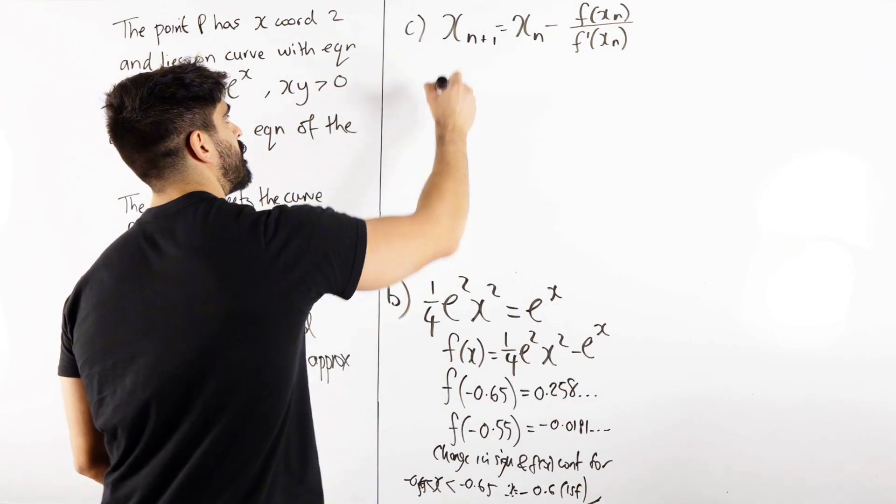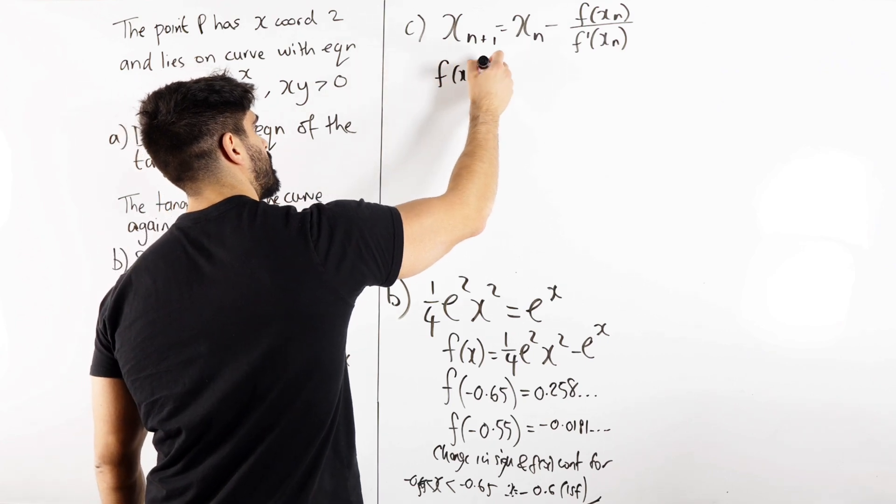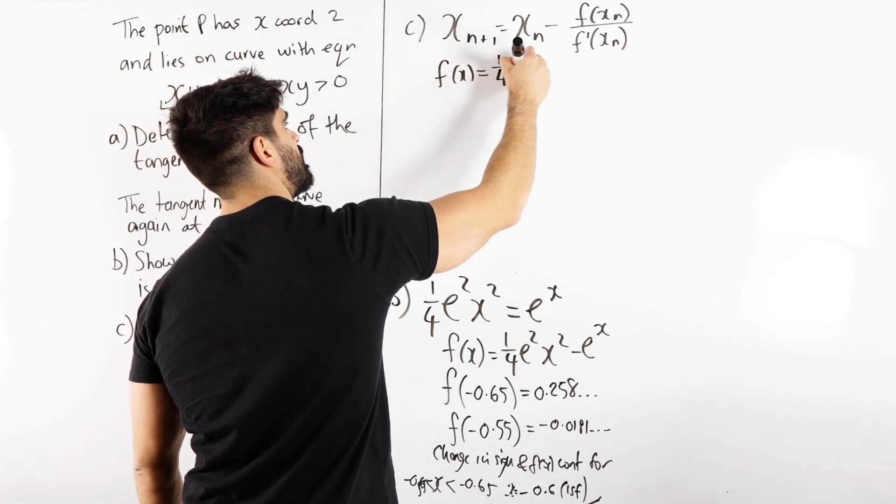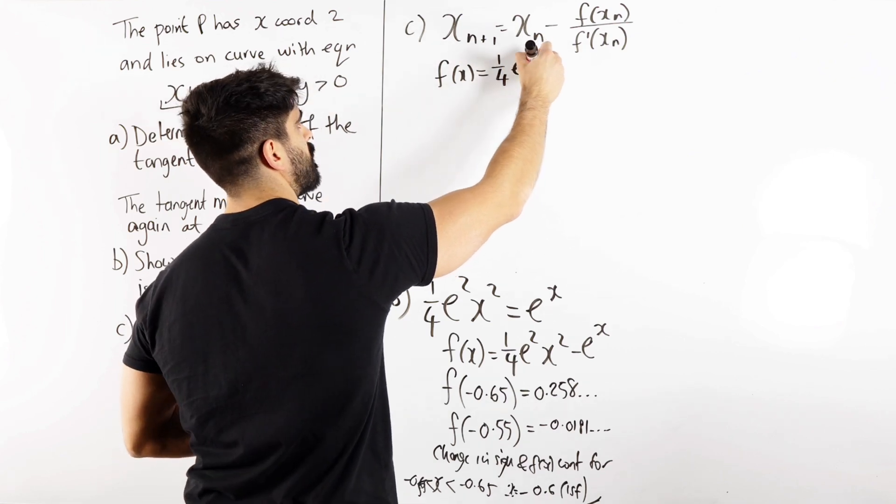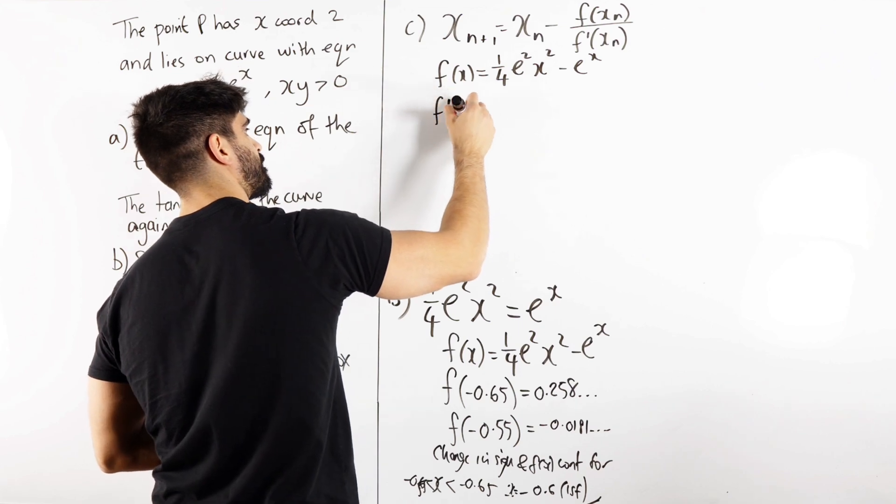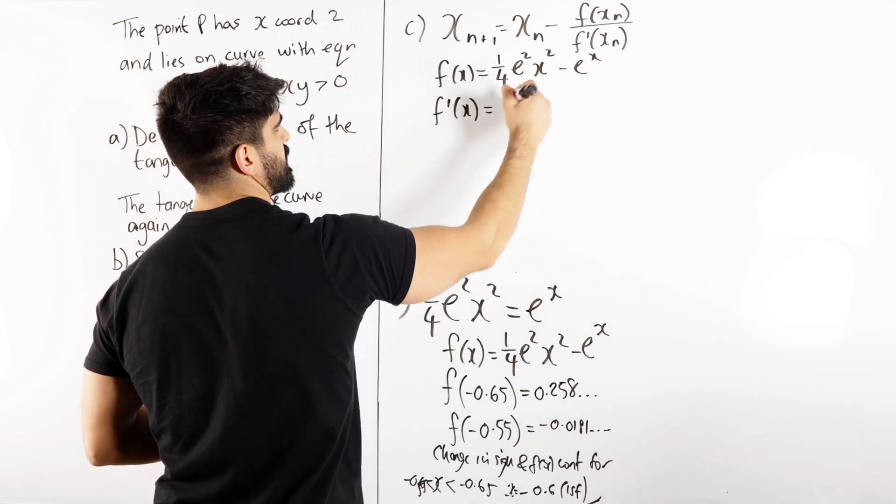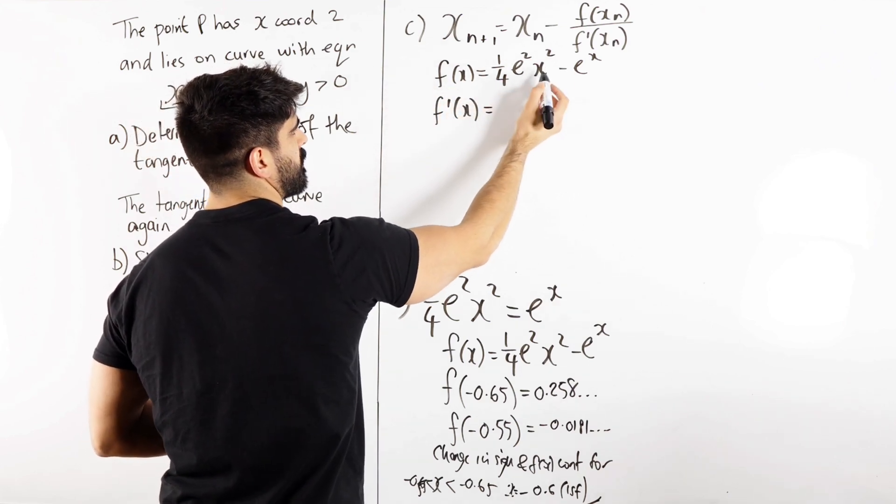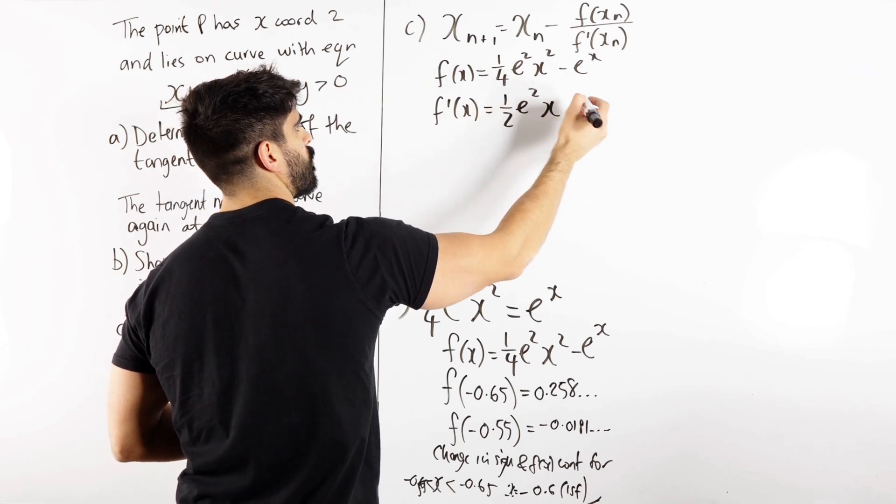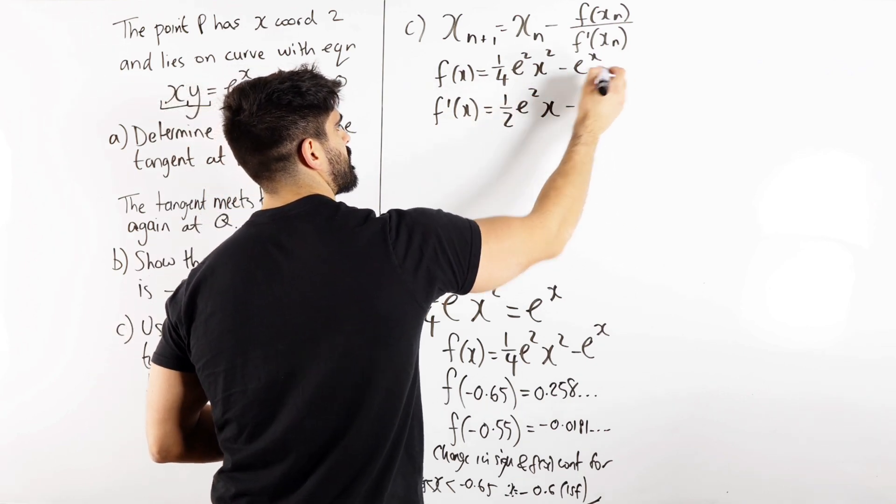So for us, our f of x is a quarter e squared x squared minus e to the x. You're ready to differentiate that. So you bring down the 2, because this is just a multiplier, right? x squared, bring down the 2, we get a half e squared, knock one off the power, and e to the x differentiates to itself.